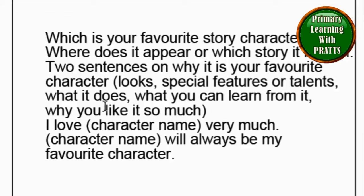Two sentences on why it is your favorite story character — things like looks, special features or talents. Like if you choose to write about Doraemon, you can write how they look: Doraemon is blue in color. Or special features and talents: Doraemon is a robot, he has many different gadgets. Or if you choose to write about Chota Bheem, you can write what special things he does. You could also write things like what you can learn from them: we learn to be honest from them, or we learn to take the help of our friends from them. And why you like them so much: I like it so much because Doraemon has lovely gadgets.